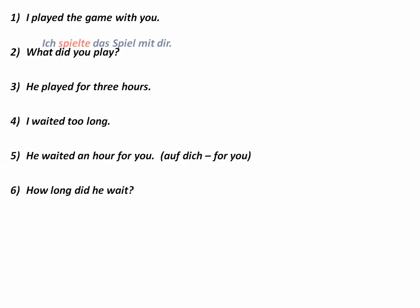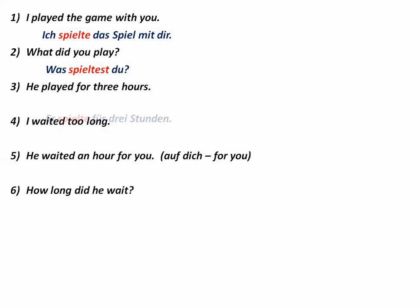Some examples: Ich spielte da — I played there. You could also use the perfect: Ich habe da gespielt. What did you play? Think of Old English: 'What played you?' — Was spieltest du? Or in the perfect: Was hast du gespielt? He played for three hours — Er spielte für drei Stunden. In the perfect: Er hat für drei Stunden gespielt.